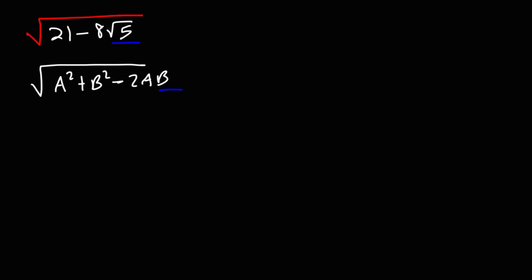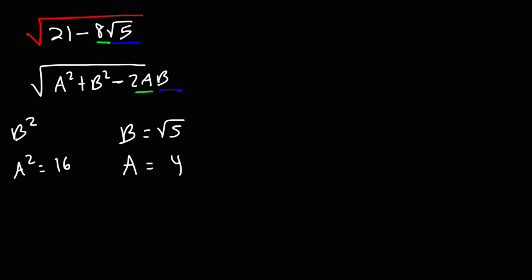If b is equal to the square root of 5, that means 8 has to equal 2a. So if 2a is equal to 8, divide both by 2 — that means a is equal to 4. If a is 4, a squared is 16. And b squared: if you square the square root of 5, you get 5. Notice that a squared plus b squared adds up to 21.